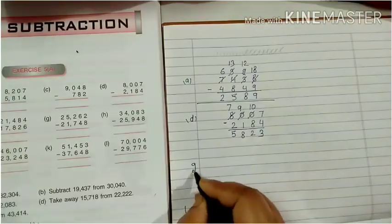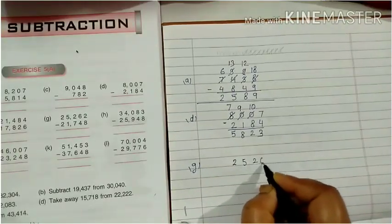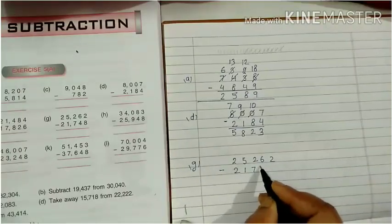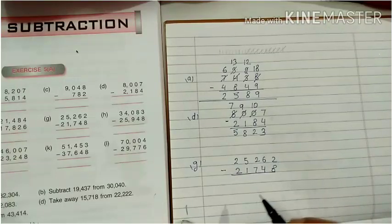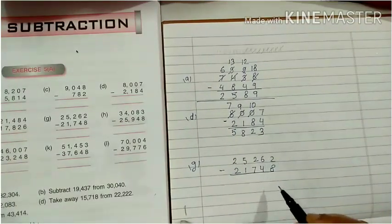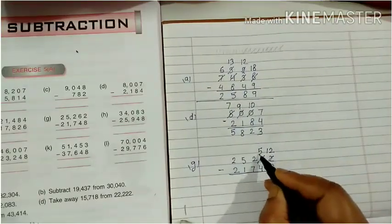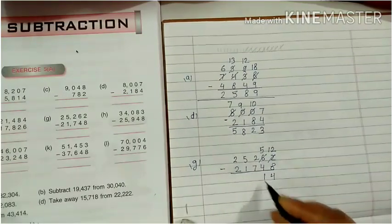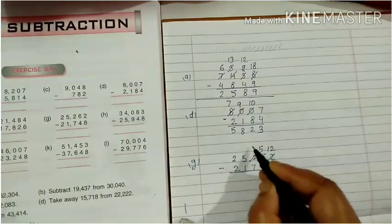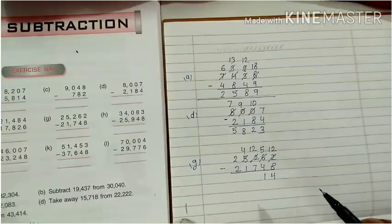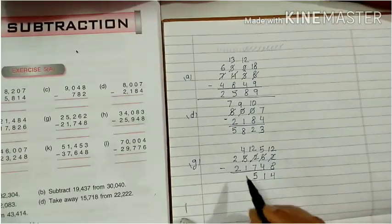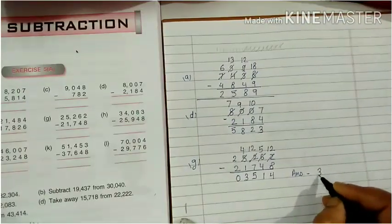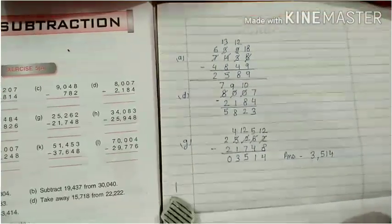Let's do Question G: 25,262 minus 21,748. First, 2 minus 8 is not possible, so we will take a carry. It will become 12 and the tens digit will become 5. 12 minus 8 is 4. 5 minus 4 is 1. 2 minus 7 is not possible, so we carry — it becomes 12 minus 7 is 5. 4 minus 1 is 3. And 2 minus 2 is 0. So the answer is 3,514. This is how you have to write.